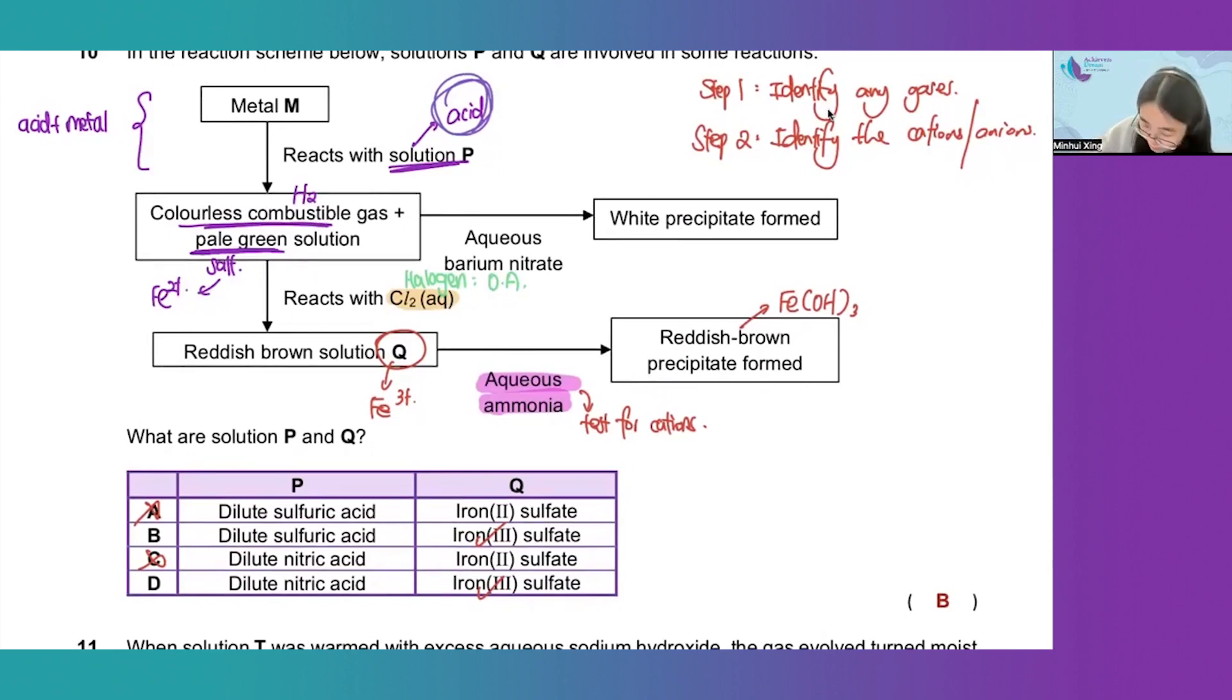We can see here that aqueous barium nitrate is an anion test reagent. What kind of anion does it test for?